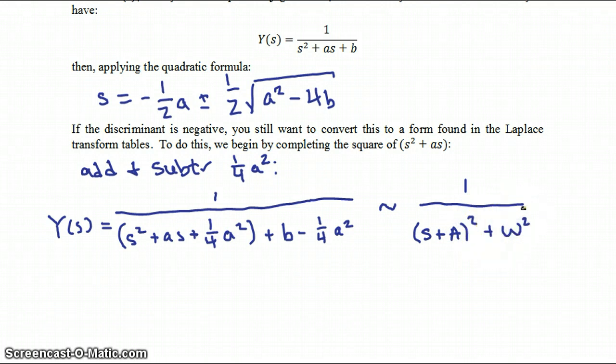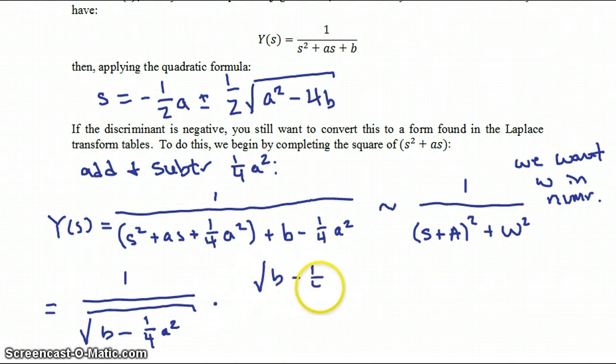Now to get this into a form recognized by Laplace transform tables, we want omega in numerator. So to find omega in the numerator, we're going to factor out 1 over the square root of B minus 1 fourth A squared out front so that we can have omega the square root of B minus 1 quarter A squared in the numerator.